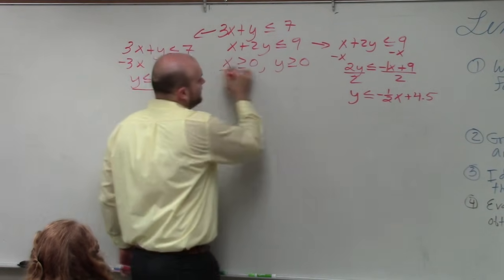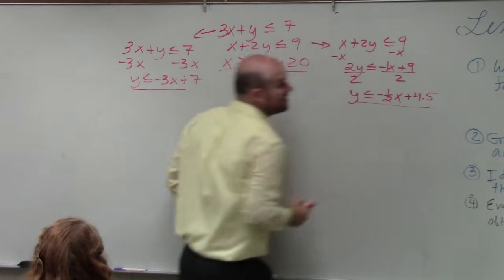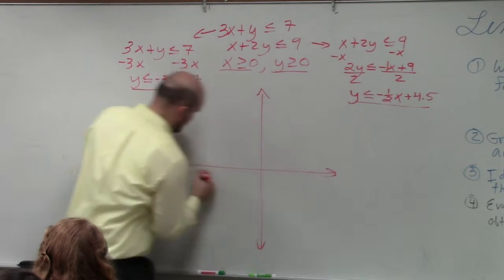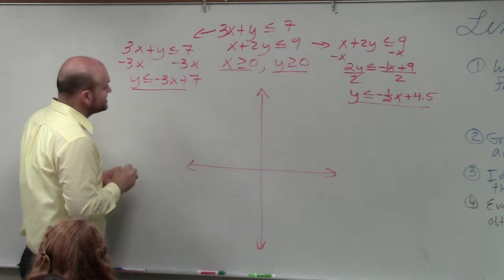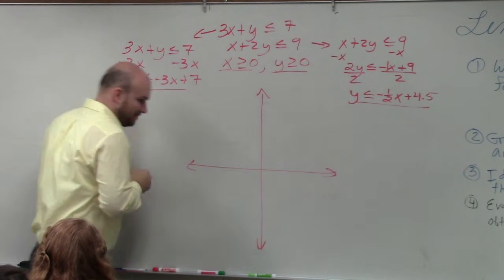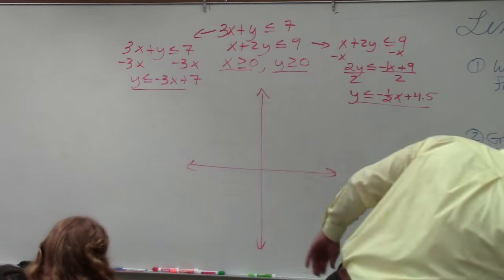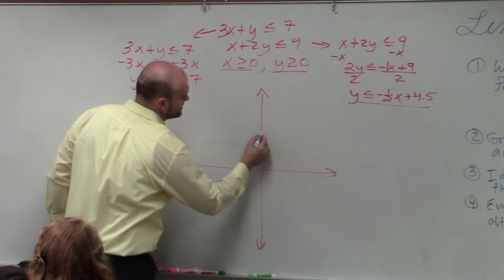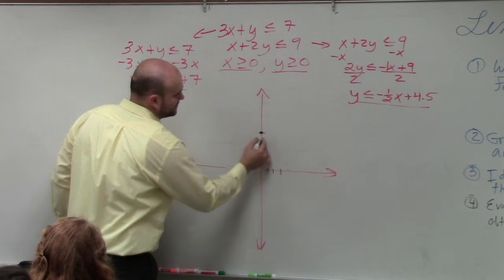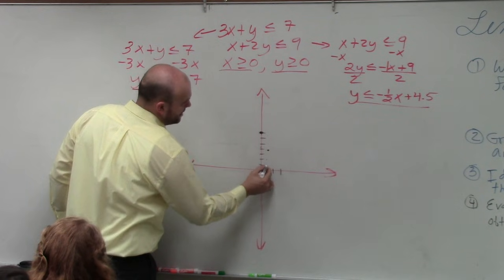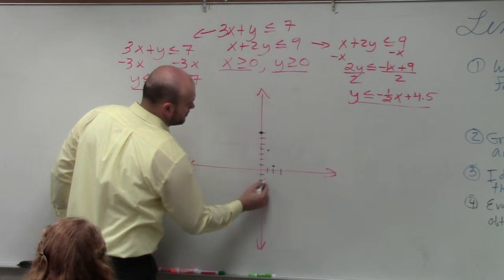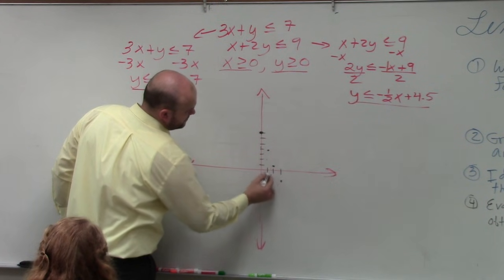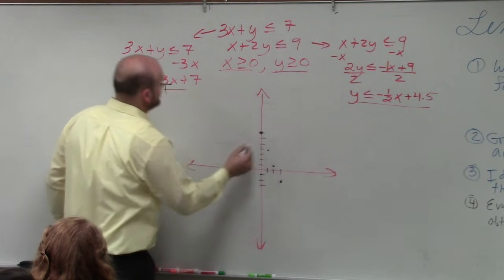All right. So now we have three, four equations we're going to graph. So first equation has a y-intercept at 7 and a slope of negative 3. Has a slope of negative 3 over 1. So I go up to 7. 1, 2, 3, 4, 5, 6, 7. And I go 1, 2, 3. I go down 3 to the right one. Down 3 to the right one. Down 3 to the right one. So it's going to look something like that.